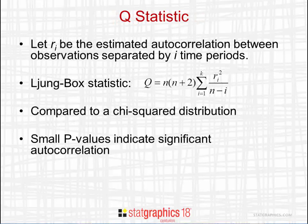In order to calculate the Ljung-Box statistic, let R sub i be the estimated correlation between time series observations separated by i time periods. The statistic we calculate is called Q, and it involves a weighted sum of the squared autocorrelations at lags 1 through k. To determine the statistical significance of Q, it's compared to a chi-square distribution. For a raw time series, the chi-square distribution has k degrees of freedom. After fitting a forecast model, the degrees of freedom is k minus the number of estimated parameters. Small p-values for the Q statistic indicate significant autocorrelation in the time series being analyzed.